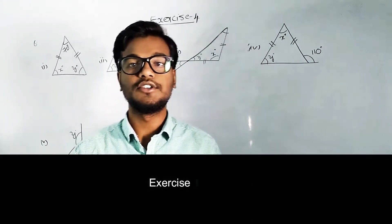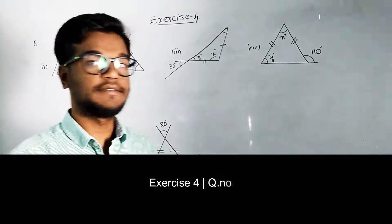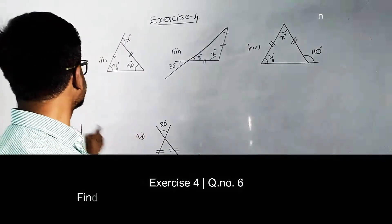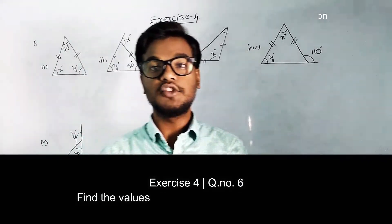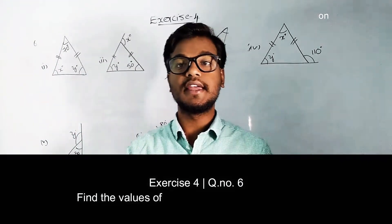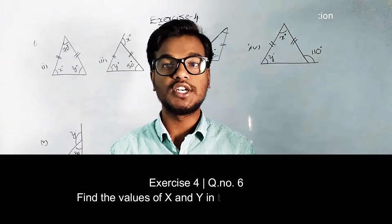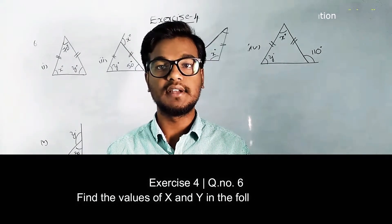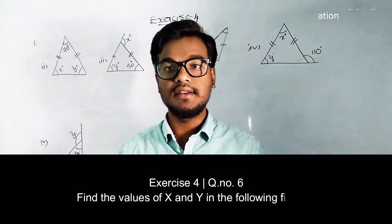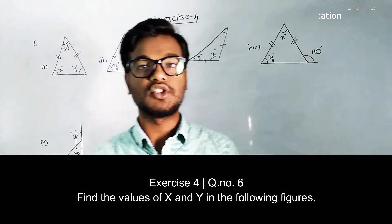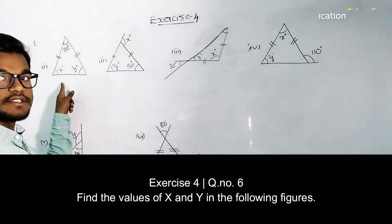Hello viewers, in this module we are going to discuss the solutions for question number six. Here they are given some triangles, and we have to find angles using the exterior angle property, interior angle properties, and one extra property that is given.